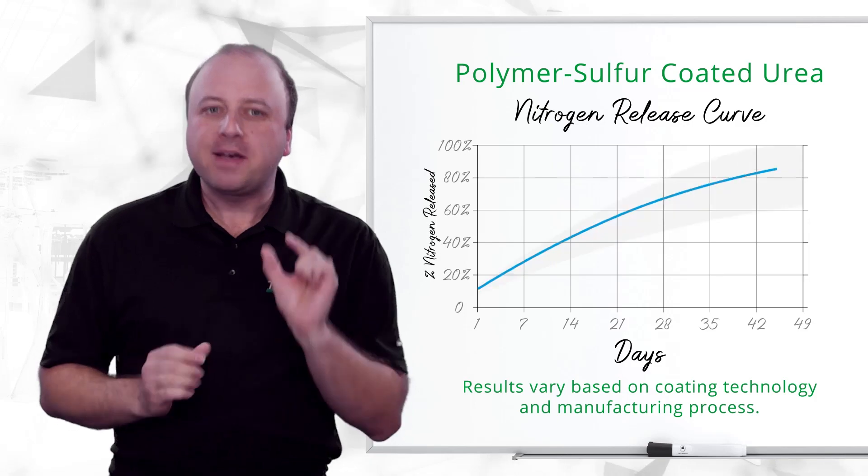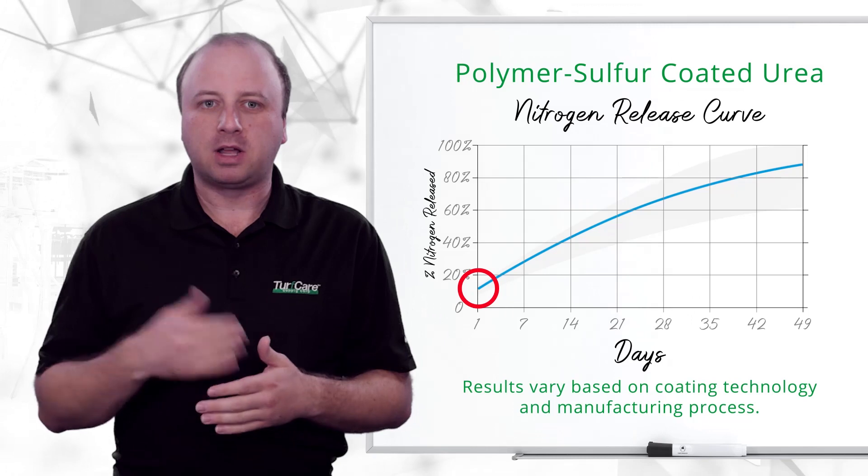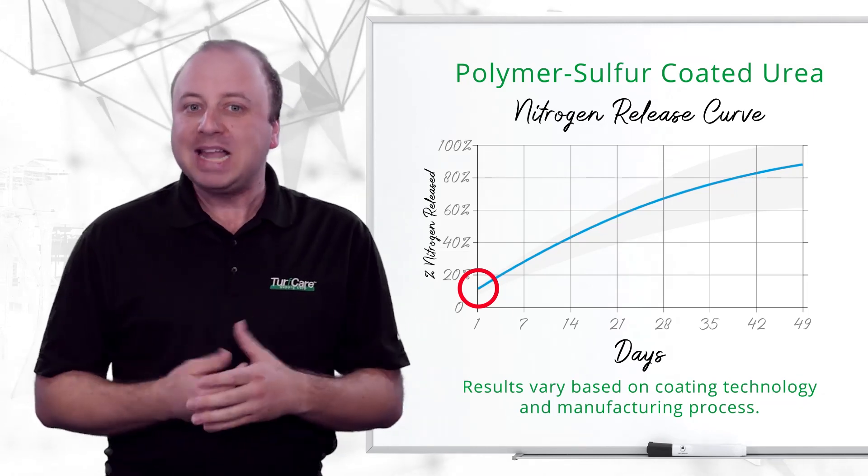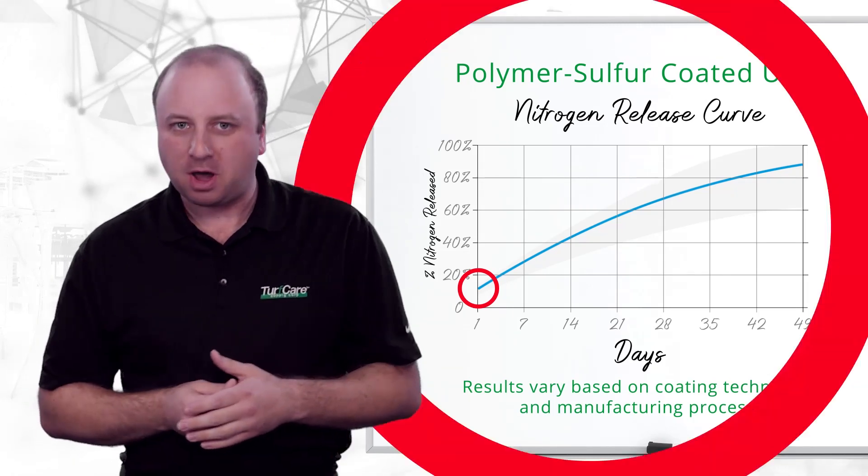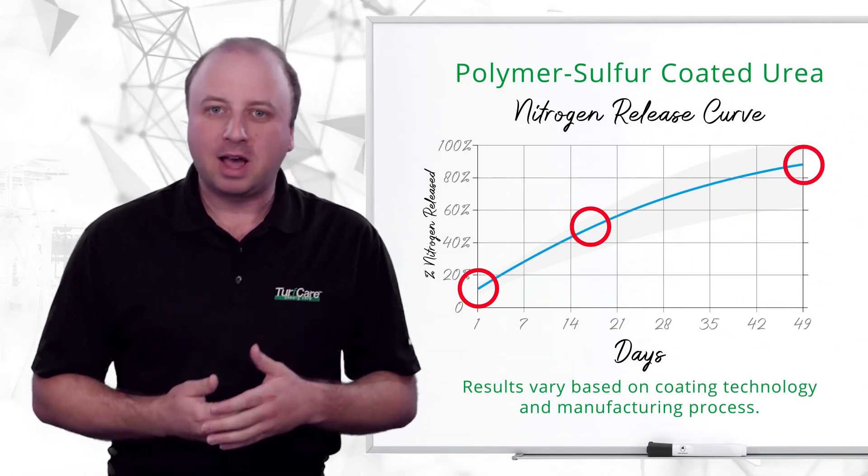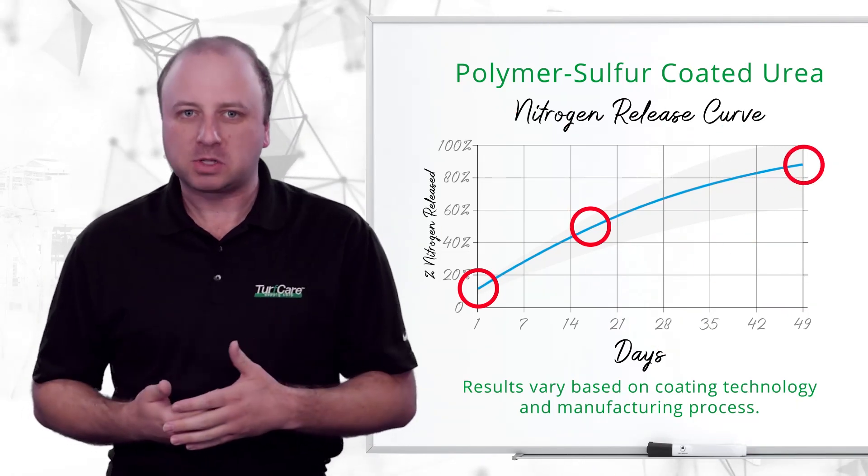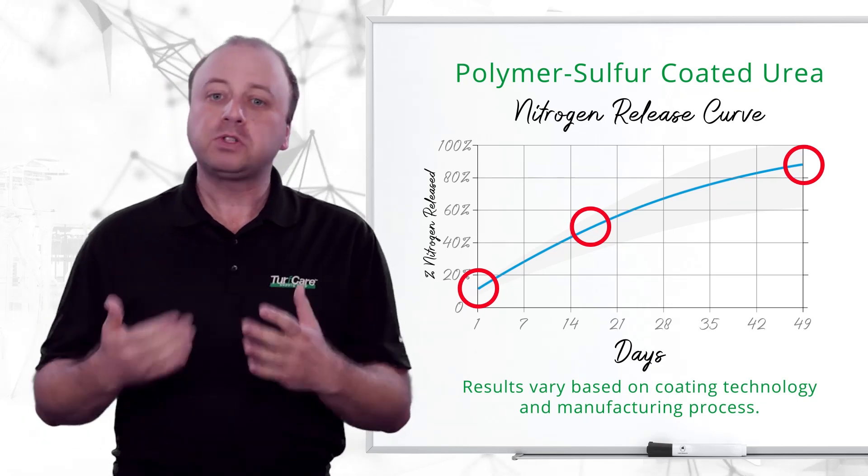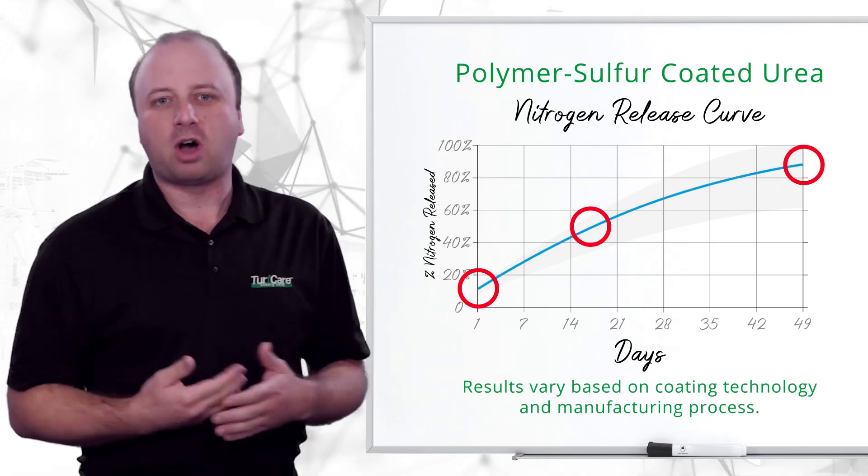Note that about 17% of the nitrogen is depleted upon spreading and watering this product into the ground. About 18 days after applying this product, about 50% of the nitrogen has been depleted and by day 49 about 87% of this product has been depleted. Also note that the curve is leveling off with time.